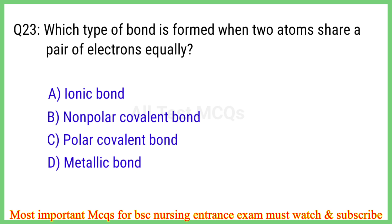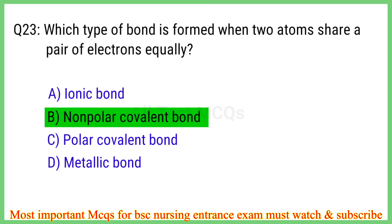Q23. Which type of bond is formed when two atoms share a pair of electrons equally? The right answer is option B: Nonpolar covalent bond.